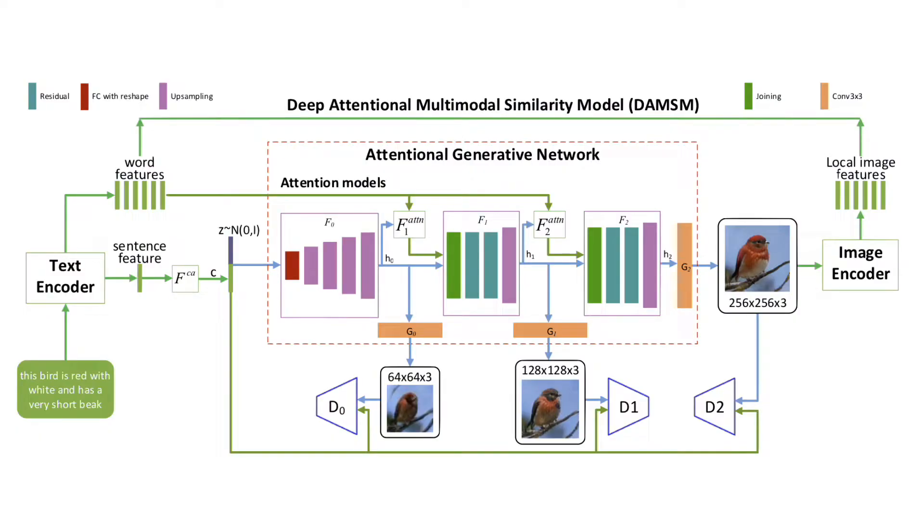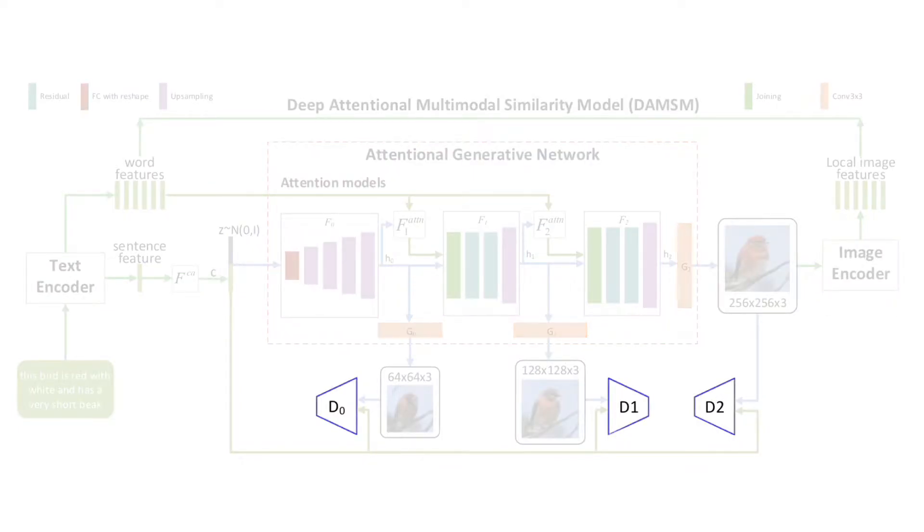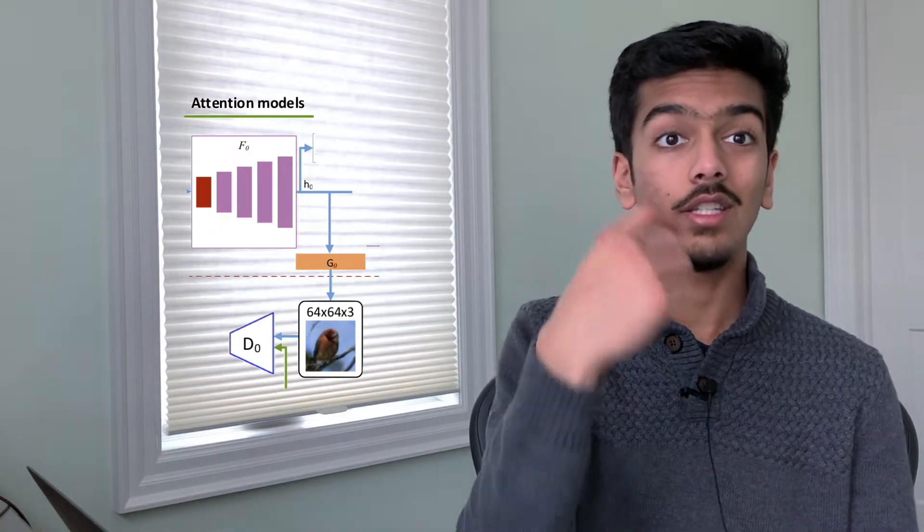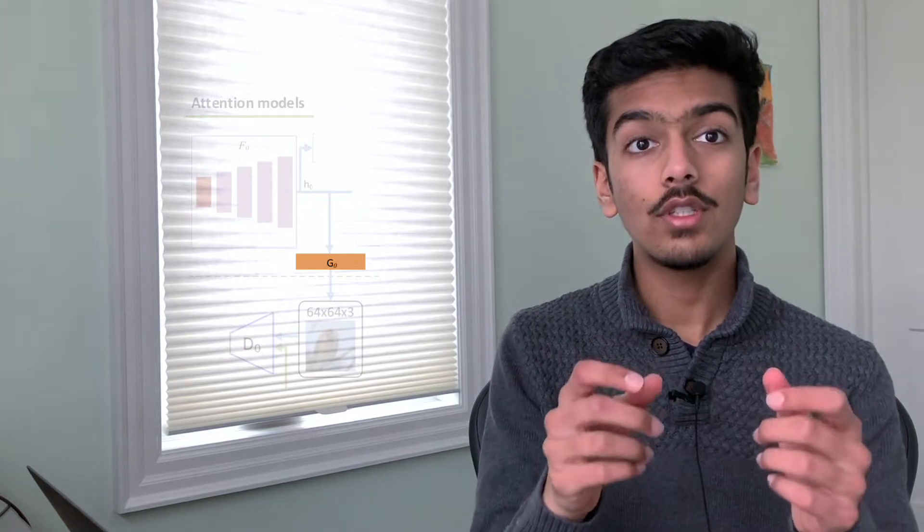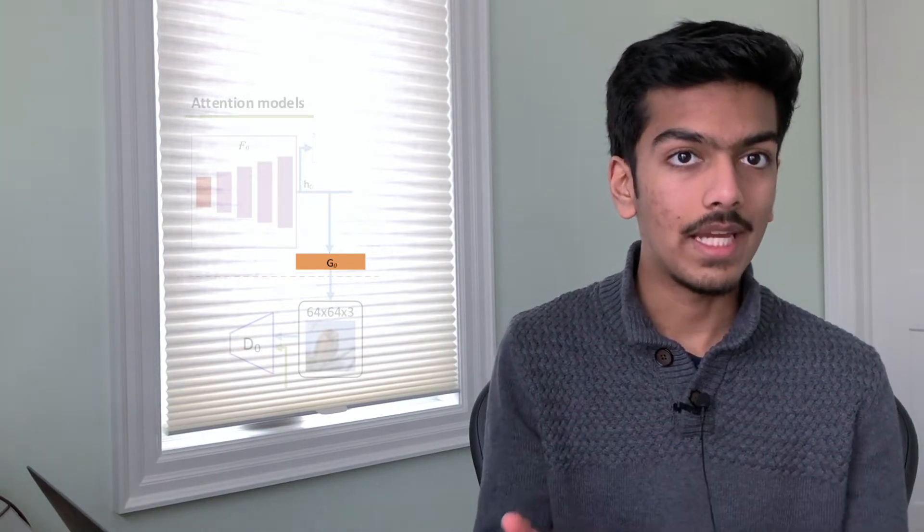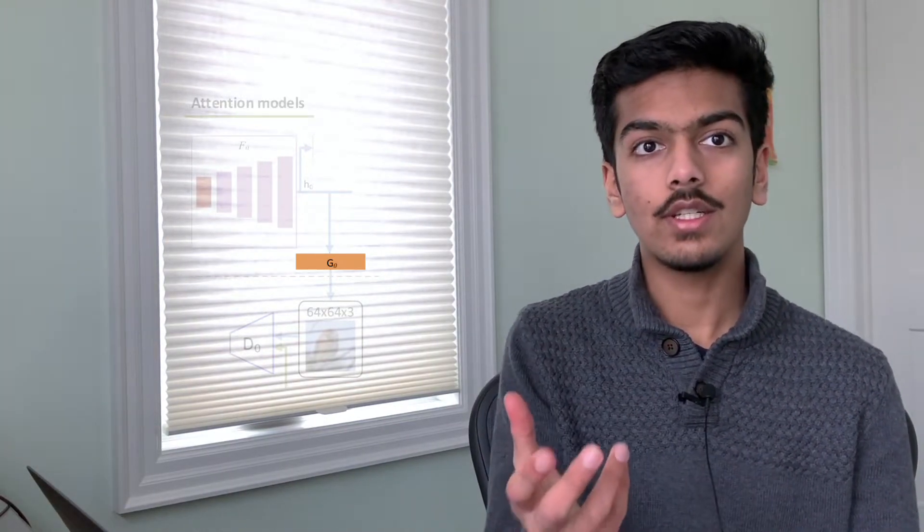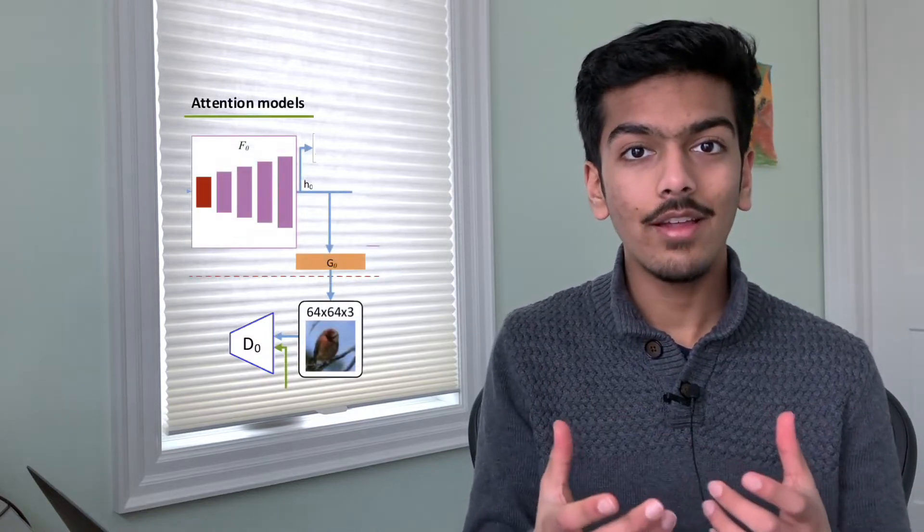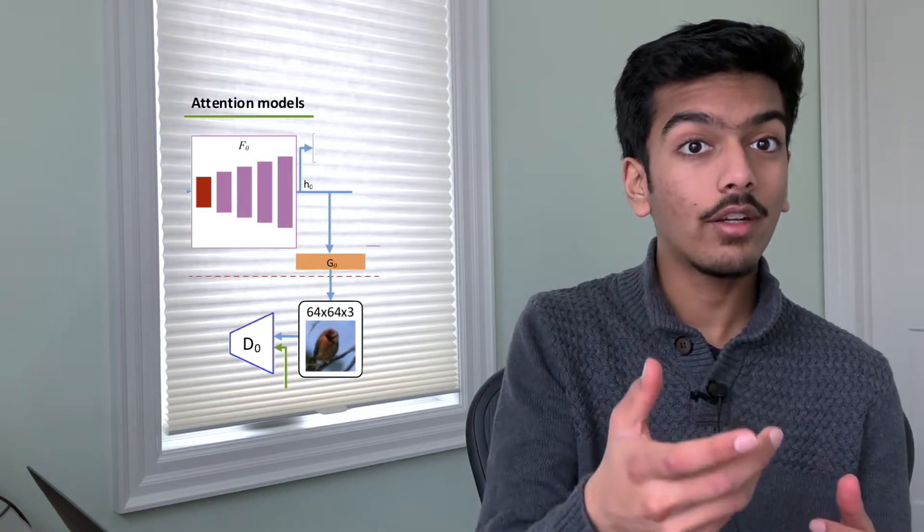Training this model is quite interesting. So every feature generator has a corresponding image generator and discriminator. So the feature generator passes its hidden state to the image generator, which is just a convolutional layer. It converts the hidden state into an RGB image. This image is then passed to the discriminator, which tries to distinguish whether it's real or fake. Based on this, the generator gets better and the discriminator.